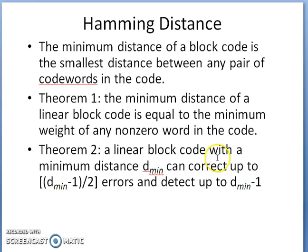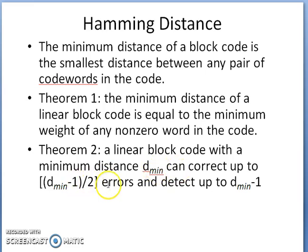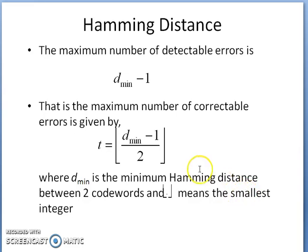Theorem 2 states that a linear block code with minimum distance d_min can correct up to floor((d_min minus 1) / 2) errors and detect up to d_min minus 1 errors. For d_min equal to 3, it can correct floor((3-1)/2) = 1 error and detect up to 2 errors. The maximum number of detectable errors is d_min minus 1, and the maximum number of correctable errors is t = floor((d_min minus 1) / 2).